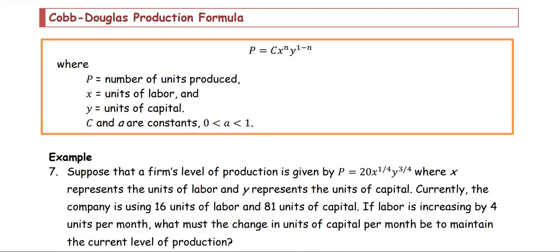In this part, we are looking at the Cobb-Douglas production formula, where p equals c times x to the n times y to the 1 minus n. p is the number of units produced, x is the units of labor, and y is units of capital. c and a are constants where a is between 0 and 1.